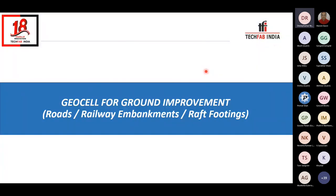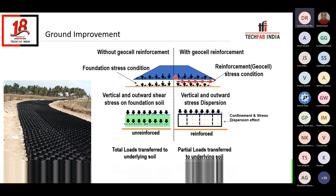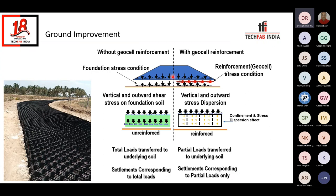Moving ahead with Geocell for ground improvement — for roads, railways, or raft footings, the mechanism is the same. Here I am showing two different sections: one unreinforced and the other Geocell reinforced. The superstructure can be either a road embankment, railway embankment, or raft footing. Loads from the superstructure are transferred onto the subsoil. If unreinforced, all loads are directly transferred onto the subsoil. Whereas when there is reinforcement at the interface of your superstructure and the subsoil: